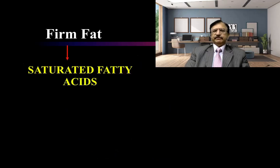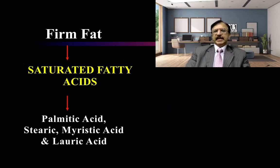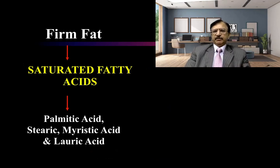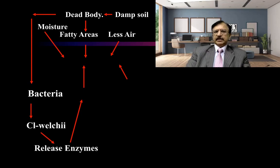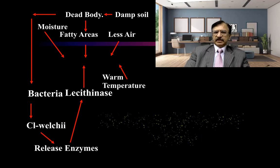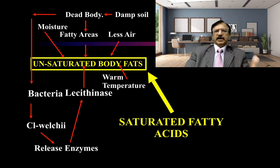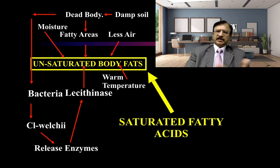Firm fat contains saturated fatty acids — specifically palmitic acid, stearic acid, myristic acid, and lauric acid. The process occurs in areas of the dead body that are fatty and have less air, moisture, and bacteria. Bacteria, predominantly Proteus, release enzymes — mostly lecithinase — and warm temperature converts the saturated fatty acids into unsaturated body fat. So in a dry yet moist atmosphere, because of bacteria and the lecithinase enzyme, saturated fatty acids are converted into unsaturated body fat.